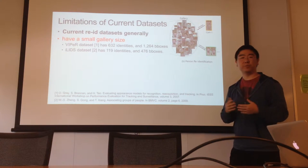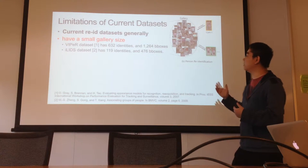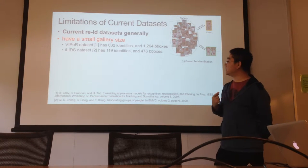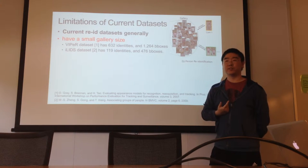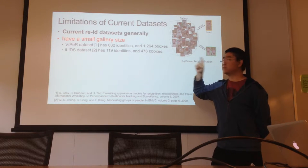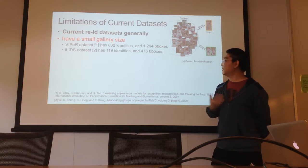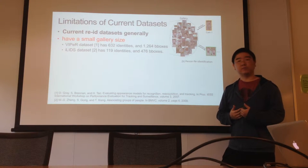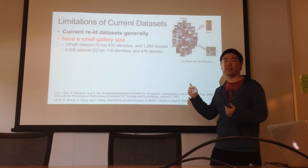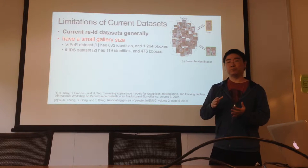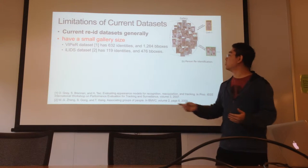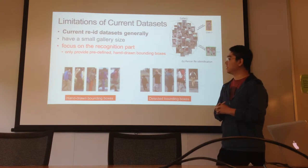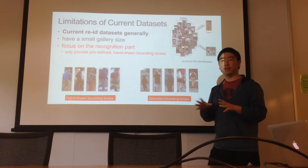This task has only begun for a couple of years, so current datasets are quite small. The VIPeR dataset is the most popular one — it only has 600 different persons and over 1,000 bounding boxes. The second popular dataset has only 100 persons and 600 boxes. These datasets are very small, so one can use very complicated methods and get very high performance, but those methods may not work on large-scale datasets. A second limitation is that current datasets only focus on recognition, not detection.